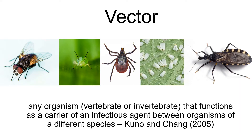Before it can be passed to a new host. For the most part, vectors are small ectotherms, and many of them are insects. Despite their small size, the diseases transmitted by these organisms have an enormous impact on human health and livelihood — both because of their public health importance, but also because many important pathogens of plants and domesticated animals are also vector-borne, so it threatens food security as well.